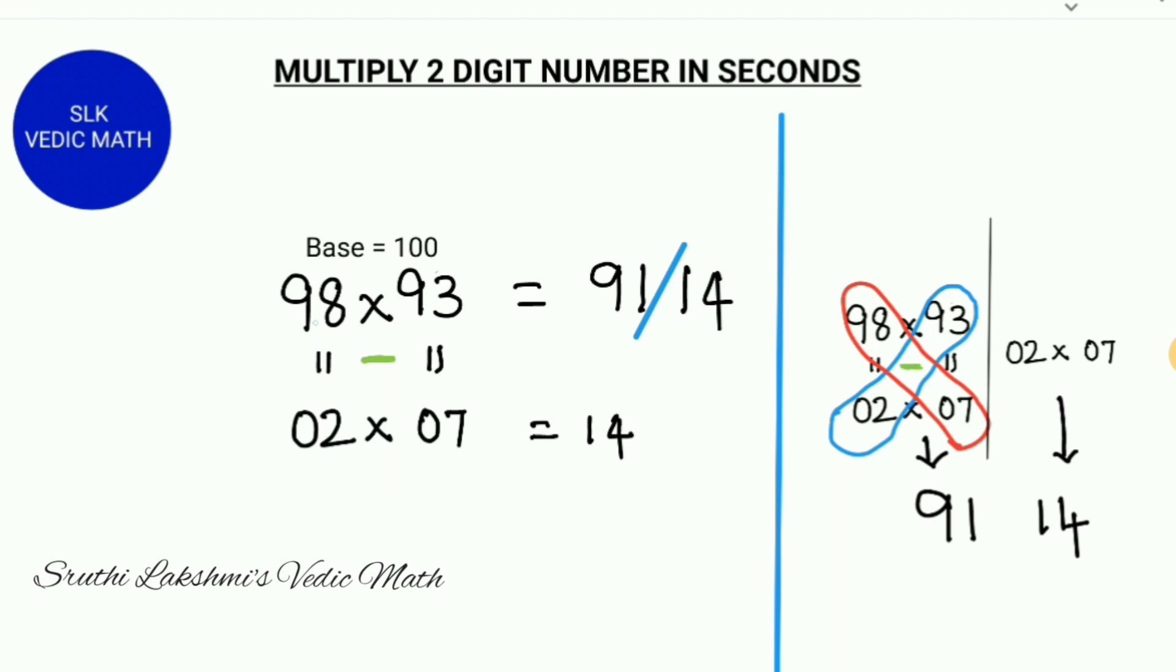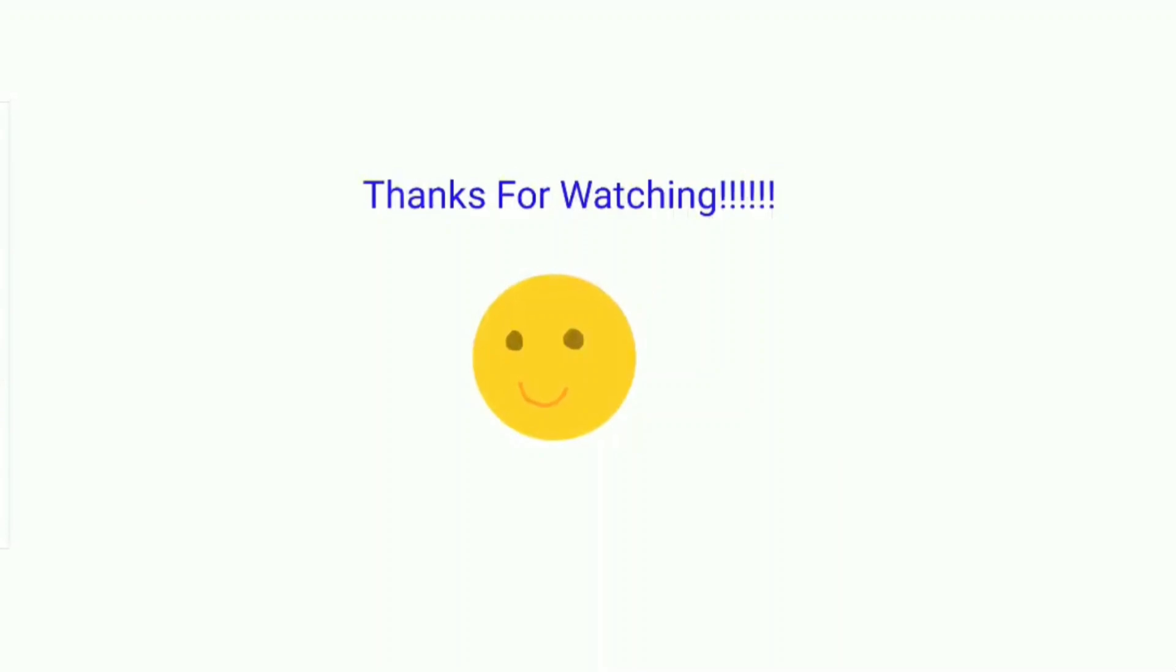So see how easy this is. So 98 into 93 is 9,114. This method is so easy and simple. Thanks for watching.